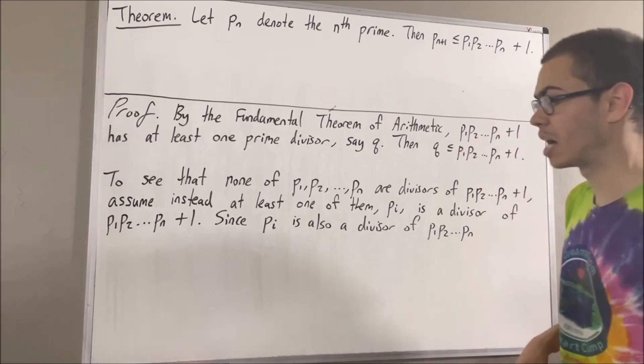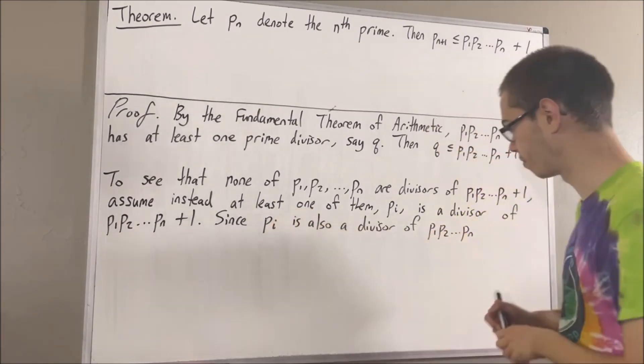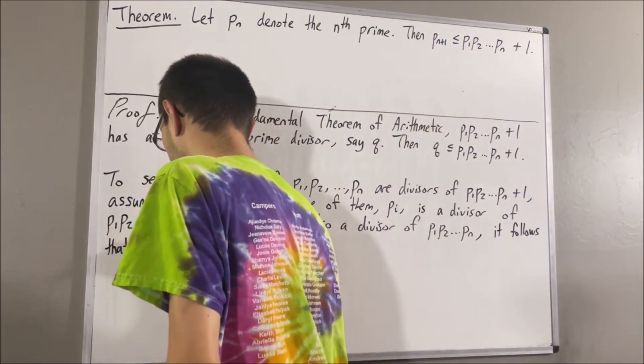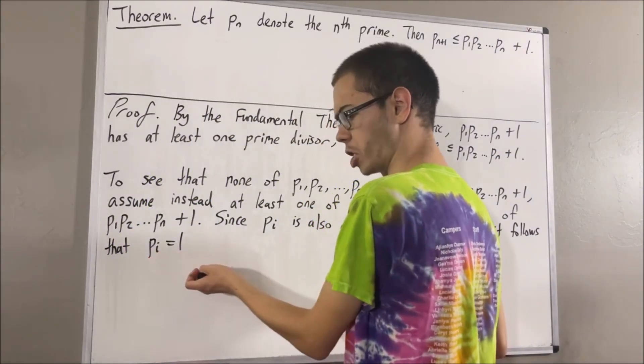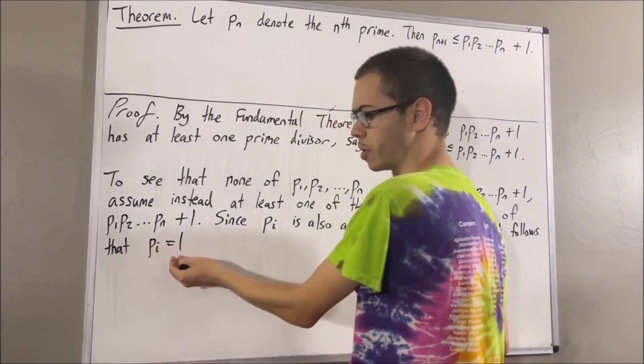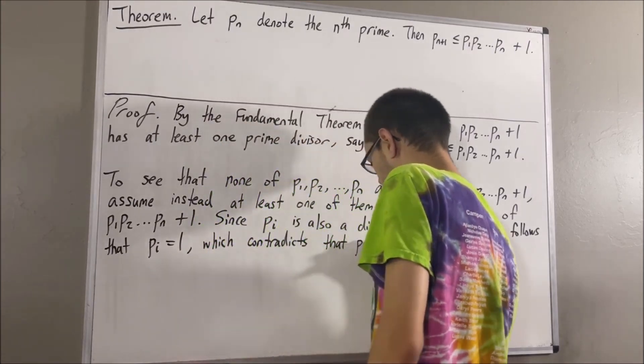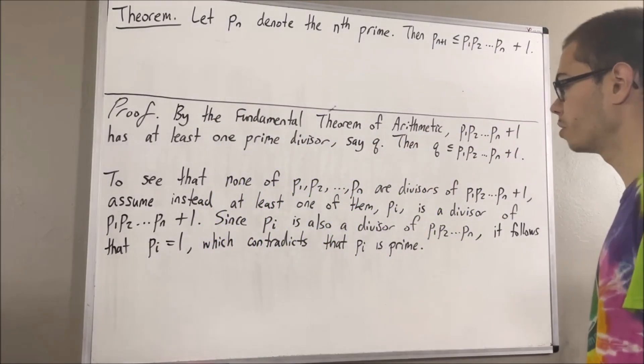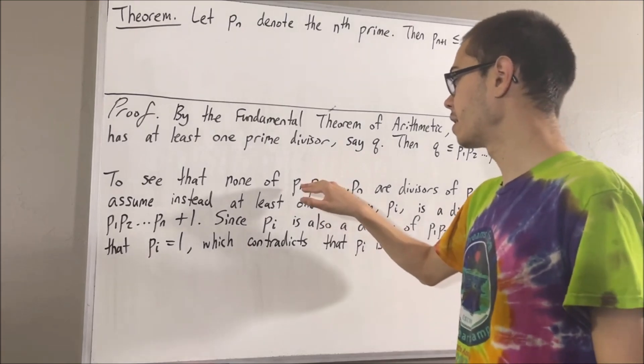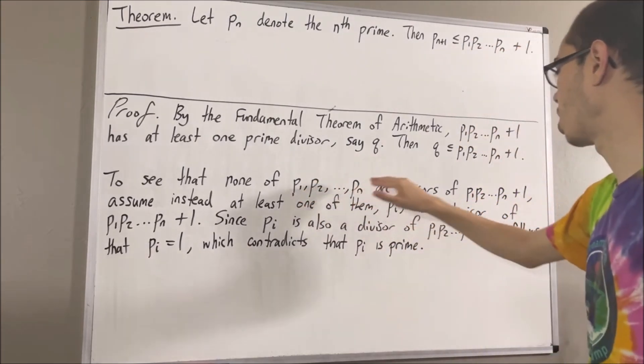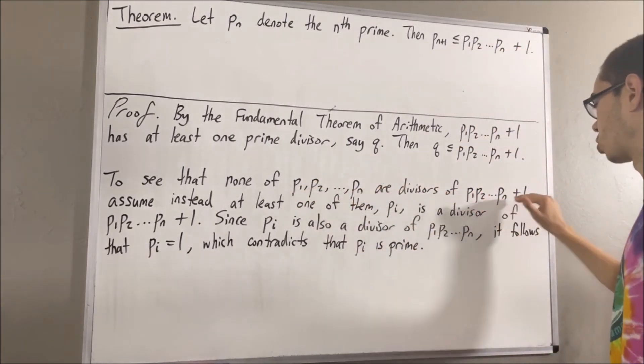And that implies P_i must be equal to one. But, we've reached a contradiction because no prime number is equal to one. So, this shows that none of the first n prime numbers are divisors of this quantity.